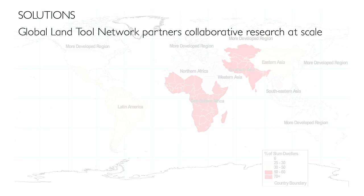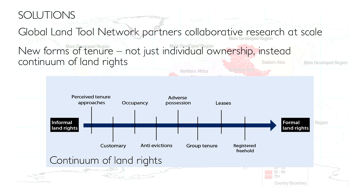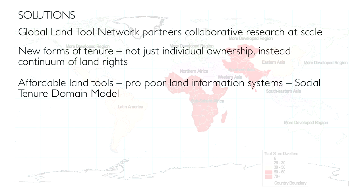What are our solutions? We have the Global Land Tool Network, facilitated by UN Habitat, with over 60 partners who do collaborative research on developing new tools at scale. First, freehold title cannot be scaled in 600 years — we need to introduce new forms of tenure, not just individual ownership. We need affordable land tools, meaning an affordable pro-poor land information system.